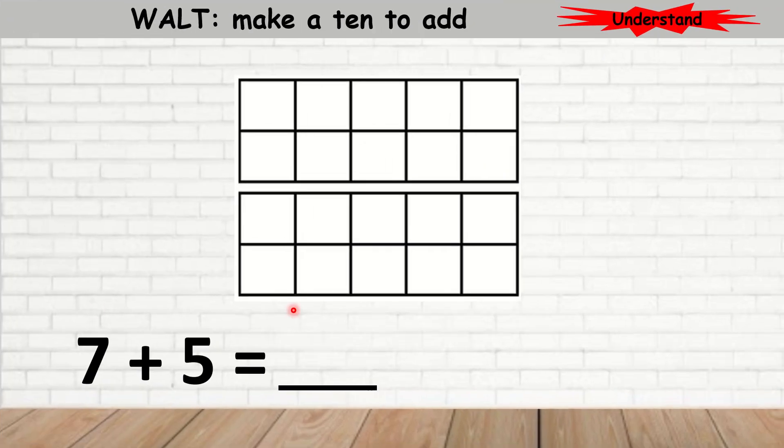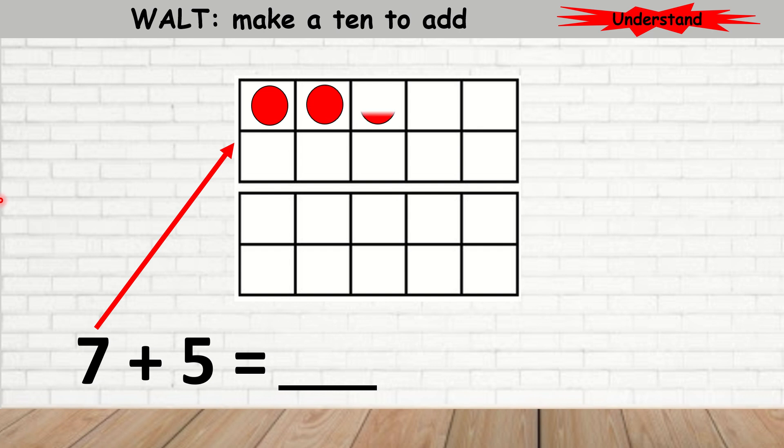Let's try another example. Here I have 7 plus 5. Again, I'm going to start with the first 10-frame. I'm going to draw 7 circles.